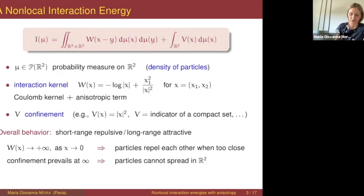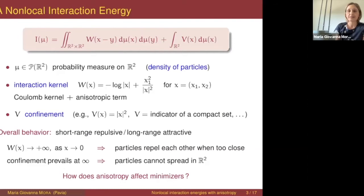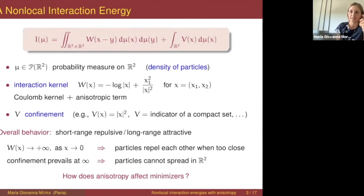What is new here is the presence of the anisotropy in the interaction. This anisotropy does not change the singularity at zero, which is still that of the logarithm, and doesn't change the behavior at infinity, which is given by the confinement. But we will see that the presence of this anisotropy will have a very strong effect on the shape of the minimizer — this is exactly what we would like to understand better.